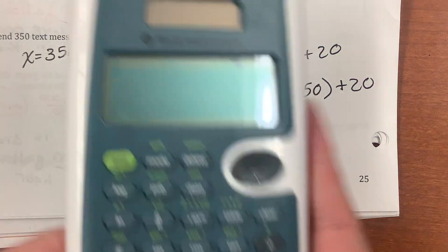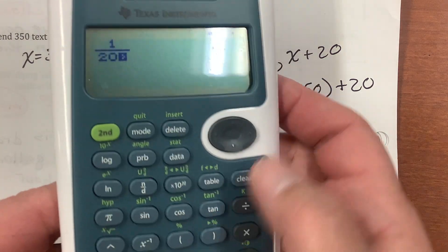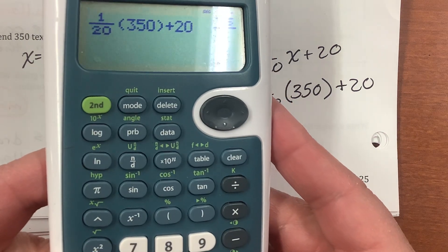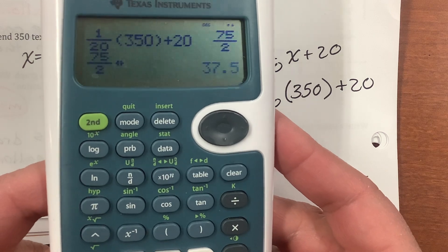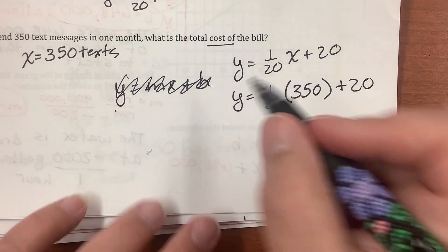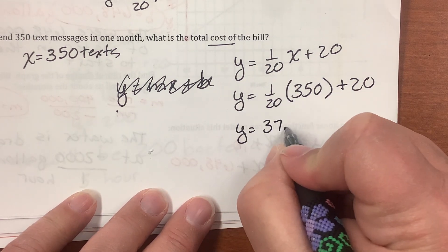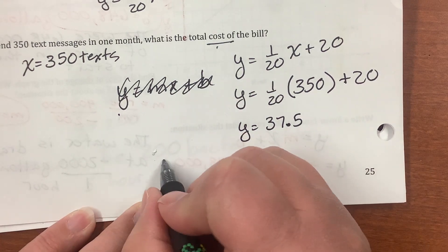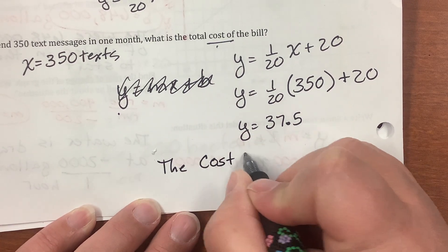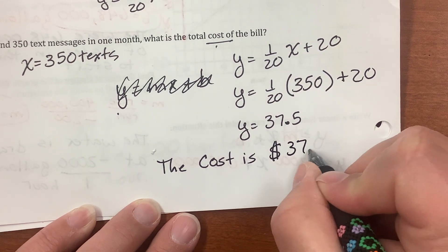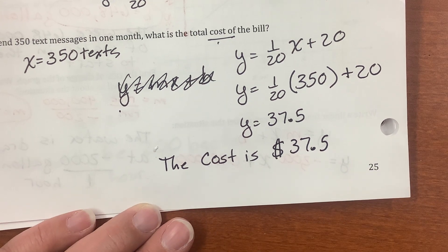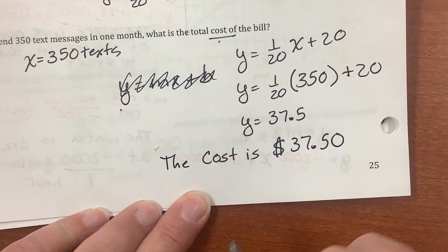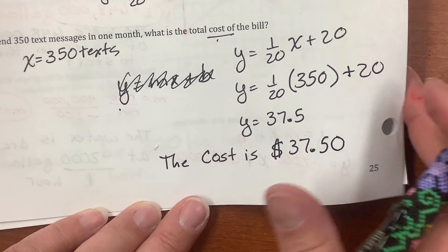1 20th times 350. Thank goodness I have my little happy calculator. 1 over 20 times 350 plus $20 is 75 over 2. That's not helping me. I need money. 37.5. y equals 37.5. Cost. What's my cost? My cost is in dollars. So the cost is $37.5. Wait a second. That's not money. Money always has two decimal places. So I am going to add a zero for my decimal place. So the cost is $37.50.